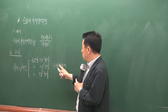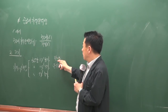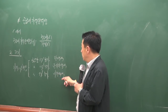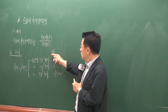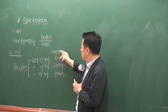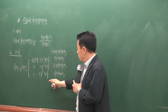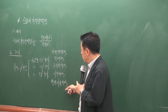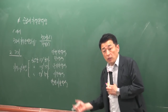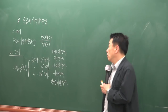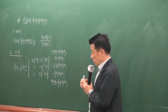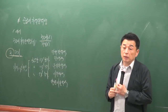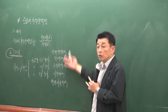단위 탄력적의 기준은 1이고요. 1보다 크면 탄력적, 1보다 작으면 비탄력적이에요. 특수한 형태로 완전 탄력적과 완전 비탄력적까지 다섯 가지예요. 크기와 부호는 다 똑같아요. 시험에도 나오고 작년에도 나왔으니 의미를 알아둬야 돼요.